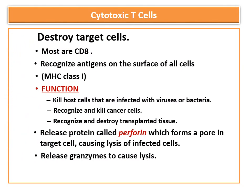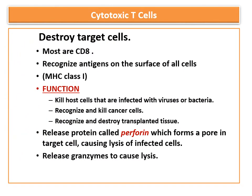The second type of T cell is the cytotoxic T cell. They are mostly CD8 positive and recognize antigens on the surface of all cells in combination with MHC class 1 protein. Their main function is to destroy the target cell — these are the main killer cells of cell mediated immunity.